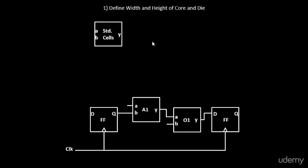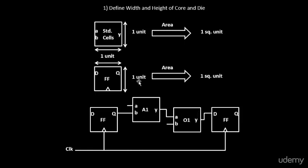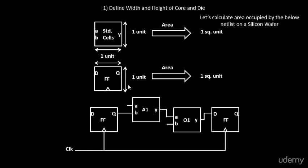Let's give rough dimensions to all the standard cells — say 1 unit by 1 unit. So the area of each standard cell is 1 square unit. We'll assume the same area for the flip-flops as well, so the area of each flip-flop is also 1 square unit. With the help of this netlist and these dimensions, we will try to identify the area occupied on the silicon wafer.